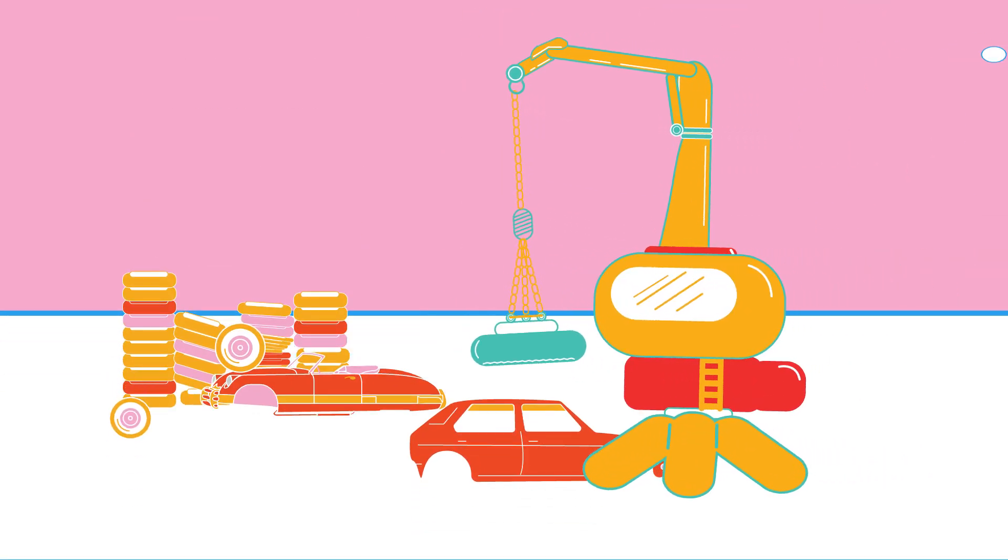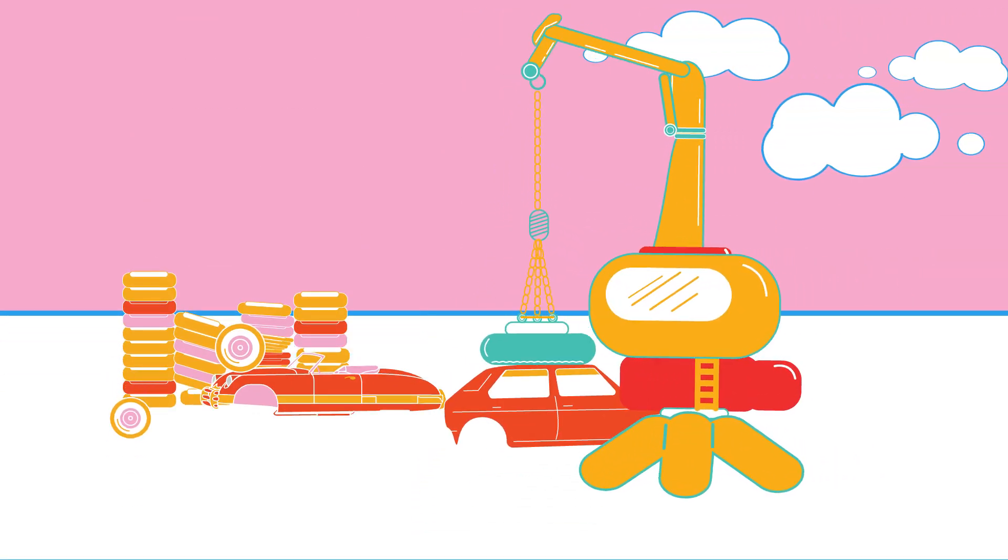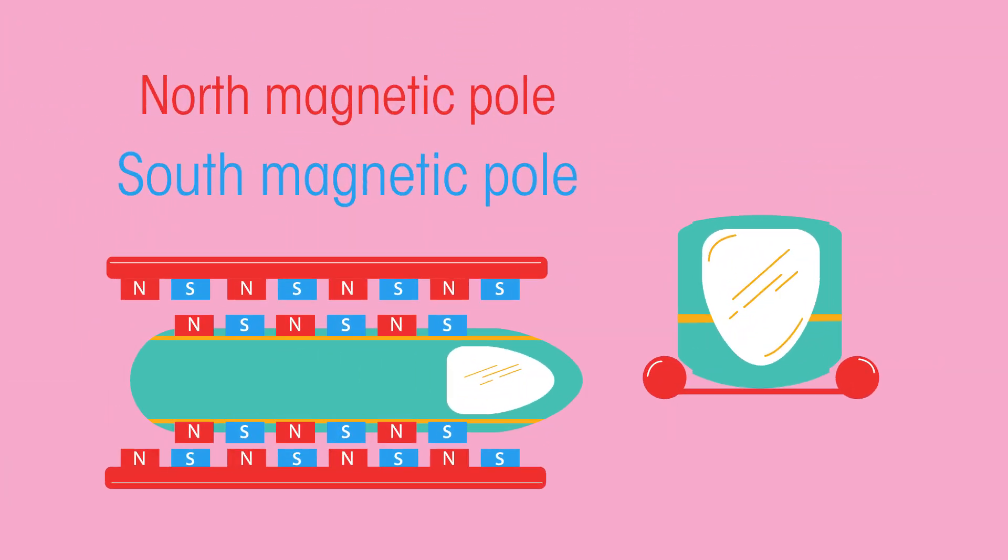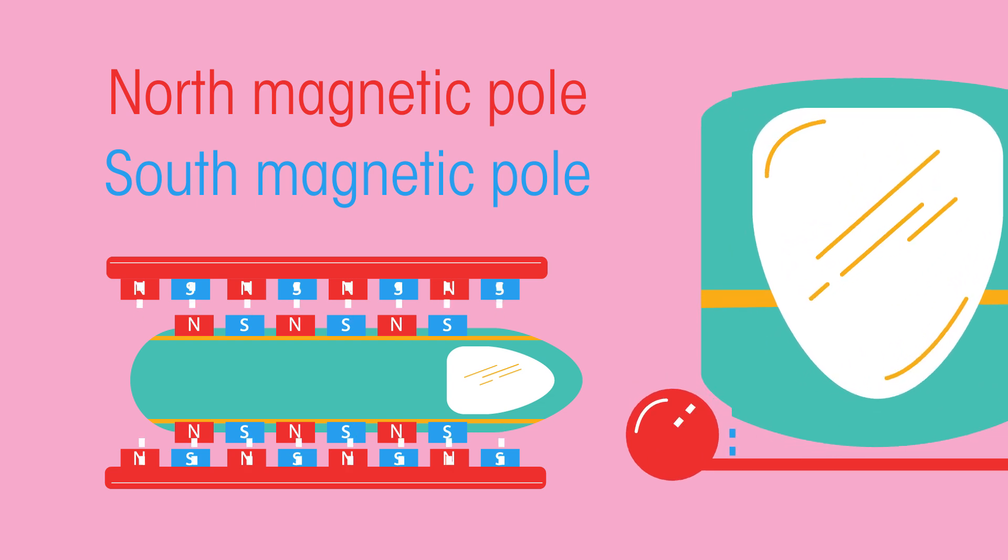Electromagnets have many uses, from moving cars in a scrapyard to high-speed maglev trains. The trains are suspended above the rails by strong electromagnets, reducing friction between the train and the track, and there are many other uses as well.